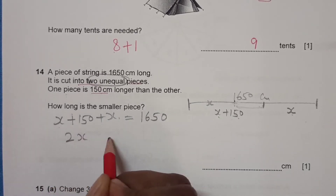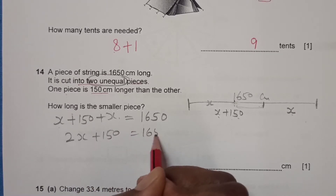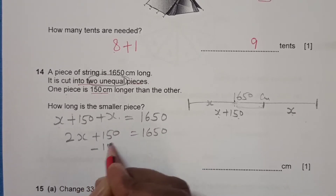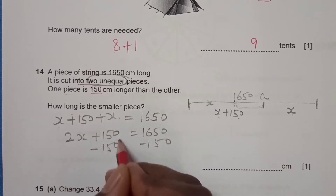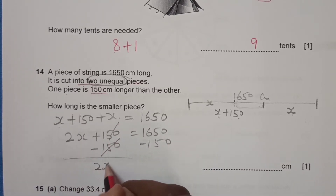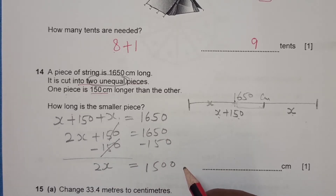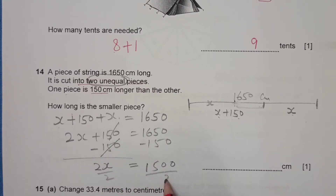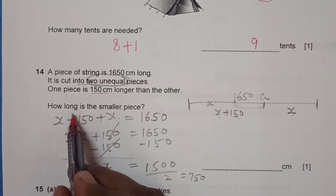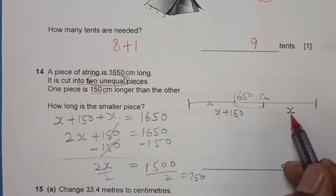From x + (x + 150) = 1650, we get 2x + 150 = 1650. Subtracting 150 from both sides gives 2x = 1500. Dividing by 2 gives x = 750. The smaller piece is x, so the final answer is 750 centimeters.